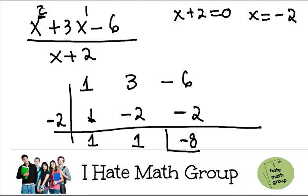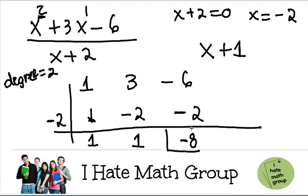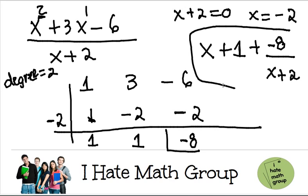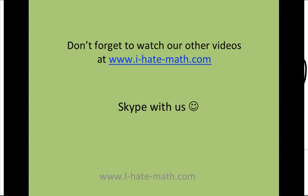Remember, the original degree was 3, so after synthetic division the degree is now 1 — this becomes a linear expression. So the answer is x plus 1. Since my remainder is not 0, I write plus negative 8 over x plus 2. That is the proper way of writing your answer, and that's it.